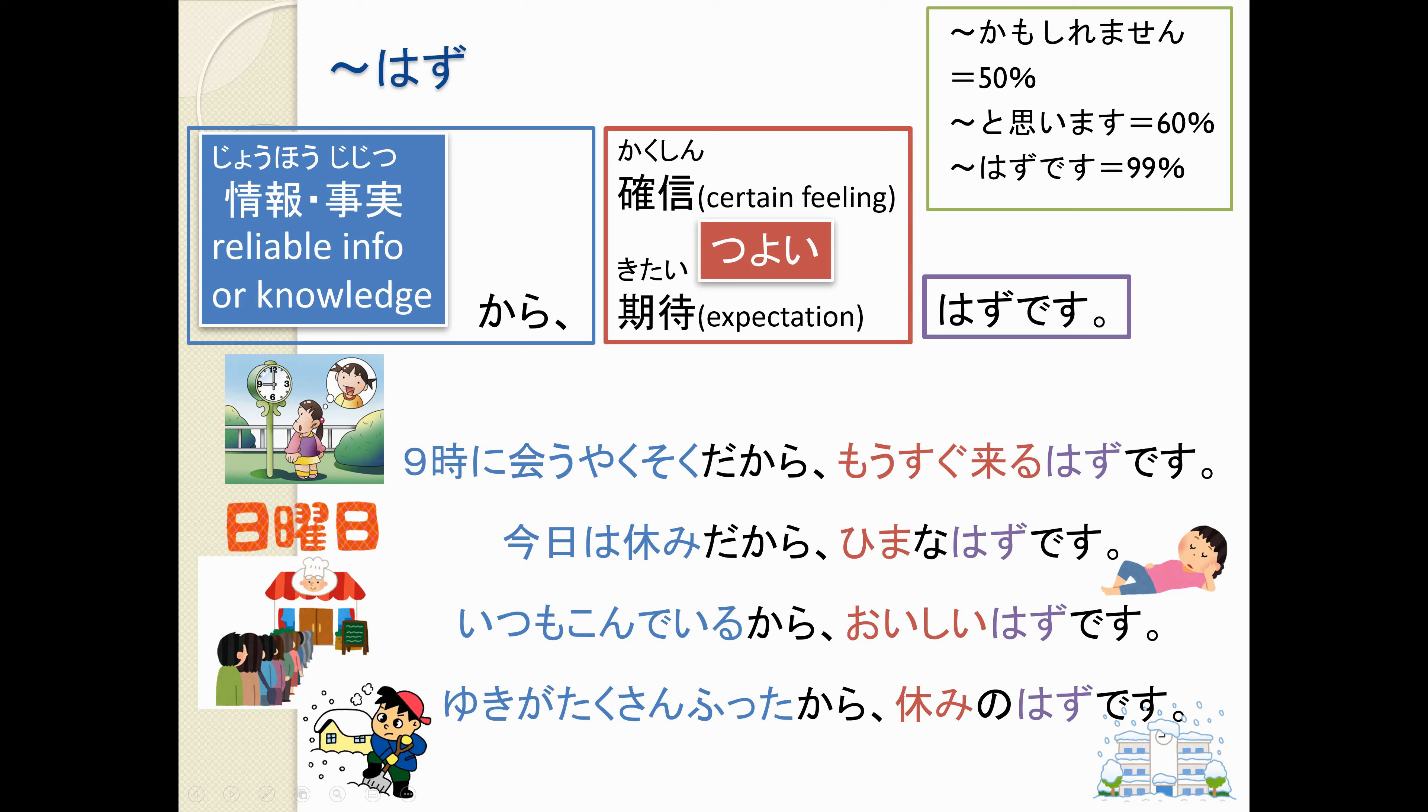かもしれません. This is when, I mean, you're like 50-50 on something. と思います. You think it is more likely to happen than not, but it still might not happen. はずです is like, you are 99% sure. This is the most strong one without being completely sure. So, for example,